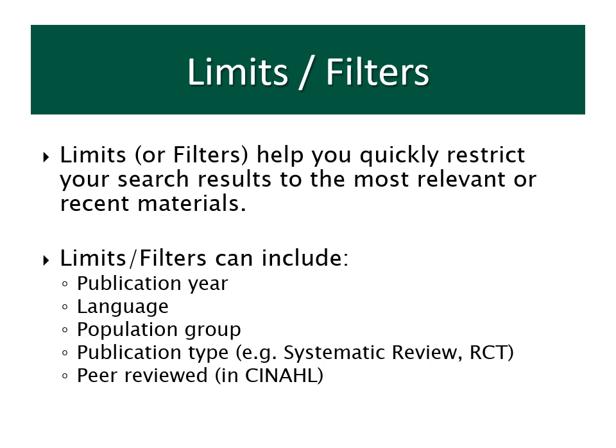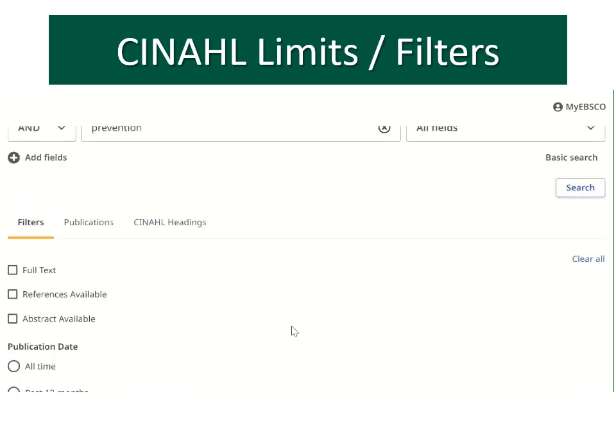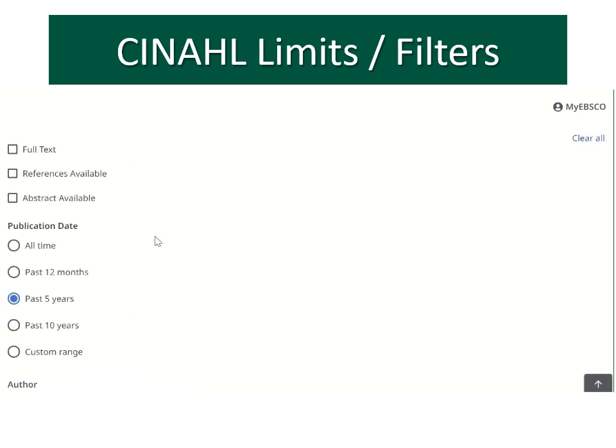Databases offer limits or filters to quickly bring results down to a manageable number if you have so many that you can't review them all. Limits and filters can include the year the article was published, what language it's in, what age group or population you're looking for, what type of publication the article is — such as a systematic review — or whether or not the article is peer-reviewed. Now that we have a few search terms entered into the CINAHL advanced search screen, let's look at how limits can filter down your results. If you scroll down, you'll see filters with the yellow underline and all sorts of options to reduce the result list. You can put in a date filter or a certain journal.